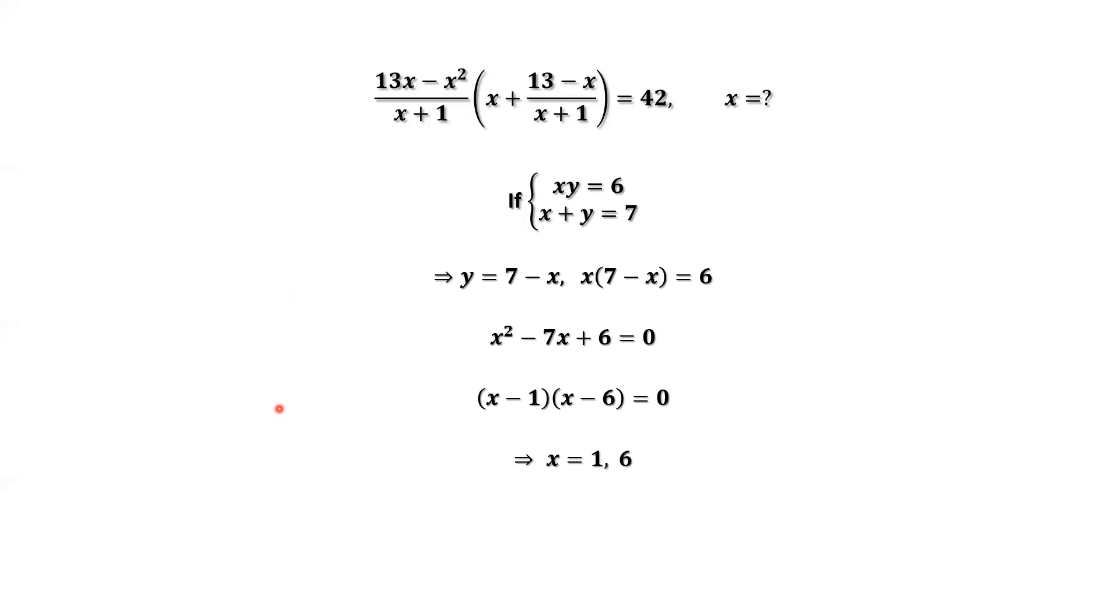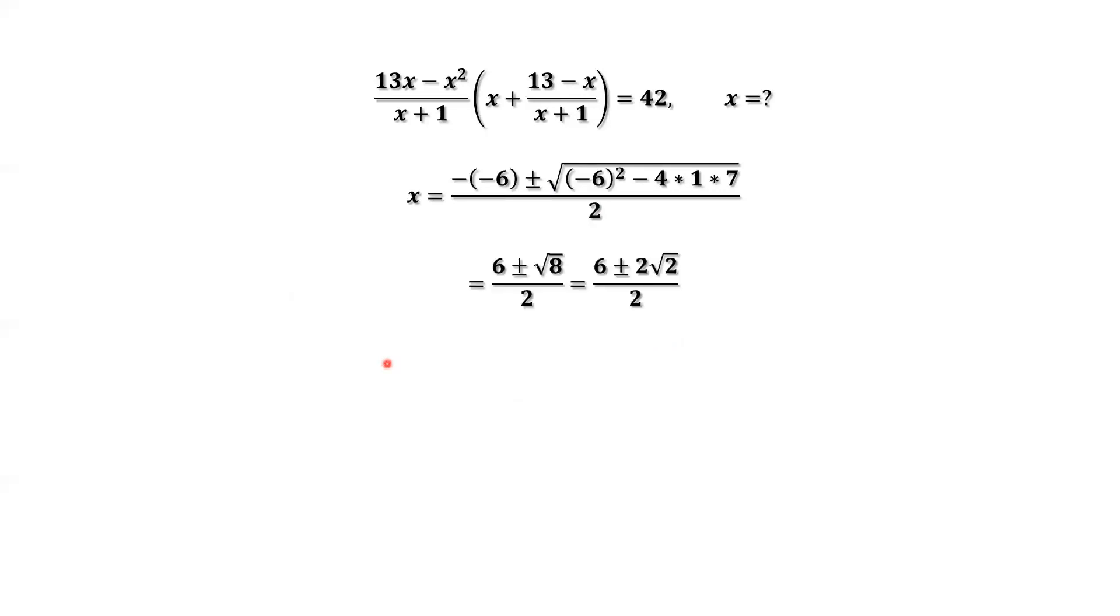Move to the second system. If x times y equals 7, x plus y equals 6. From the second equation, we can imply y equals 6 minus x. Replace y by 6 minus x. We have this result. Simplify this equation. We have x squared minus 6x plus 7 equals 0. We use the quadratic formula to find the last two roots. Continue to simplify. We have the two roots: 3 plus or minus square root of 2.